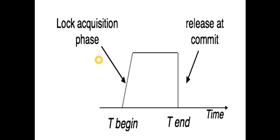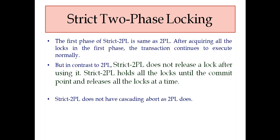One point you should notice: strict 2PL, as I have said, is a stricter version of 2PL, so it is not going to have cascading abort as 2PL does. I am repeating: strict 2PL does not have cascading abort as 2PL does. Please note that.